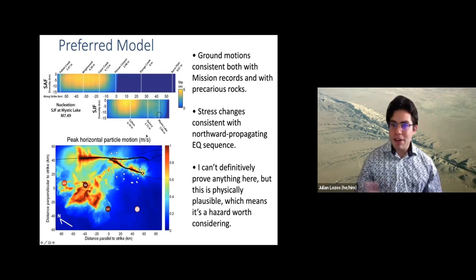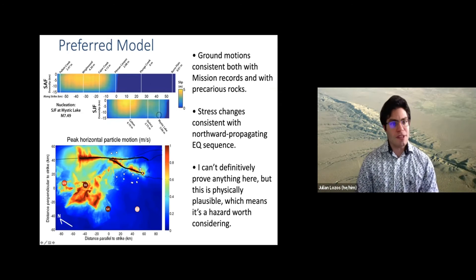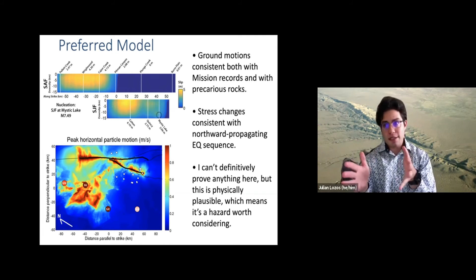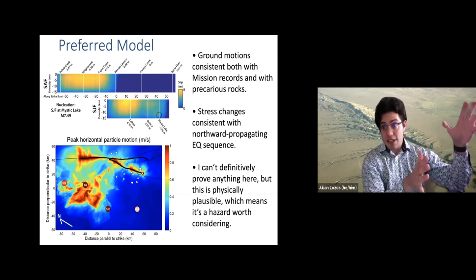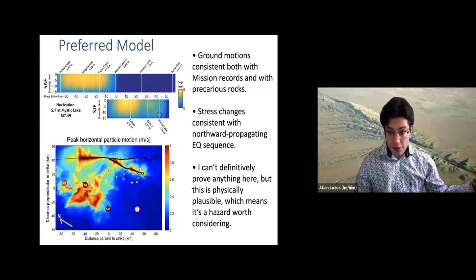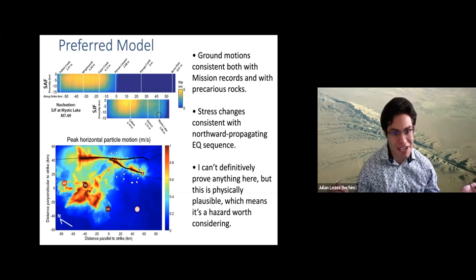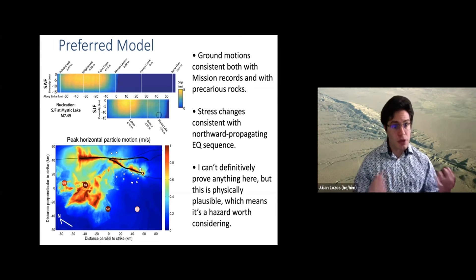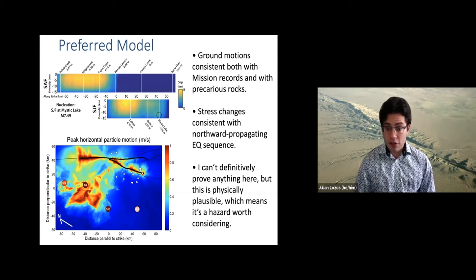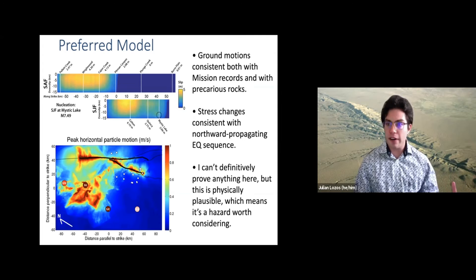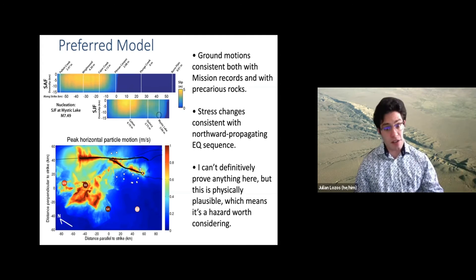Looking at a dynamic rupture model matched to paleoseismic slip per event, and then comparing the ground motions to fragile geologic features and historic data, tells me the best model for this earthquake is a multi-fault rupture of the San Andreas and San Jacinto faults that starts near the southern end of the Claremont section of the San Jacinto and propagates to the north. This is also interestingly consistent with the idea of a northward migrating sequence across the San Andreas system: the southernmost part rupturing in the early 1700s, then 1812, then 1857 further north, and finally 1906 on the northern section.